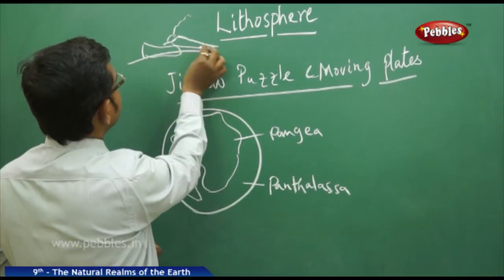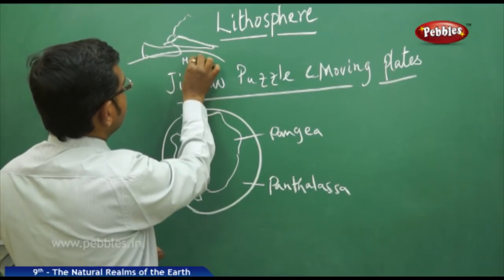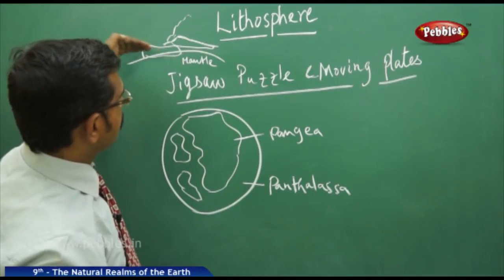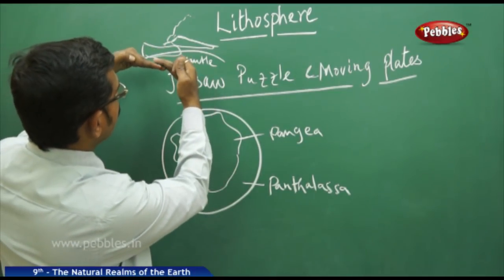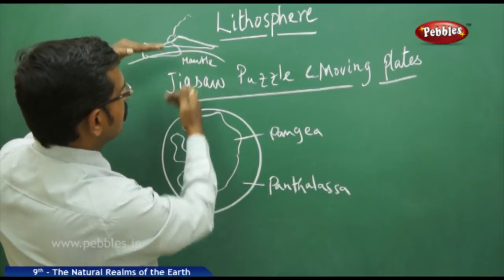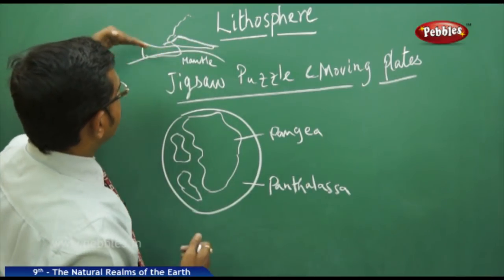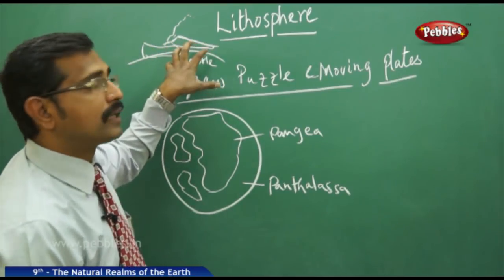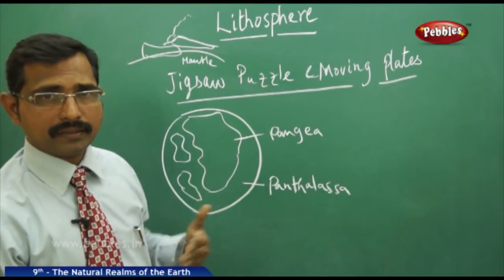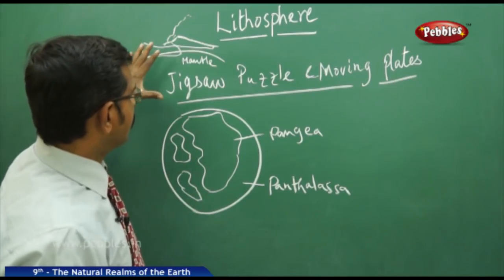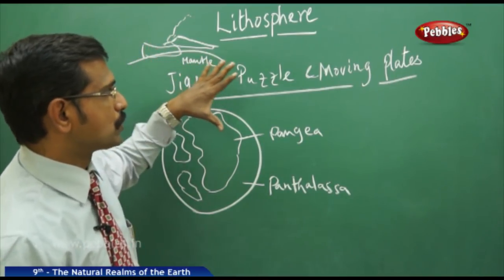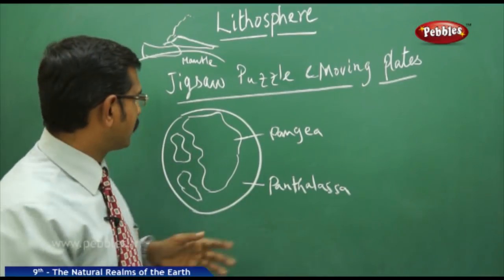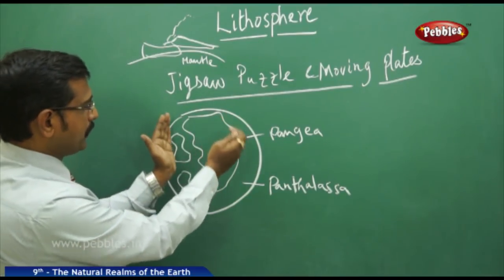As we know, this is the crust and the mantle. When two plates touch, one will go on top becoming a mountainous range, and the other part going inside the mantle will melt and become molten rock material over time. That is how the jigsaw puzzle also shows there are moving plates.